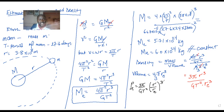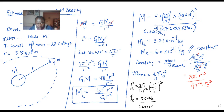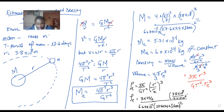They can manipulate a question from this derivation in any way. So can we now substitute and find the density? The density of the earth is going to be 3 times 22/7 divided by 6.67 times 10 to the power negative 11, times the time which is 27.6 times 24 times 3600, all squared, times the ratio of the radius — 3.8 times 10 to the power 8 — divided by the radius of the earth, which is 6.4 times 10 to the power 6, with all of this cubed.